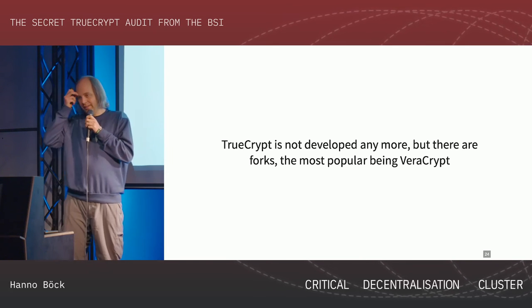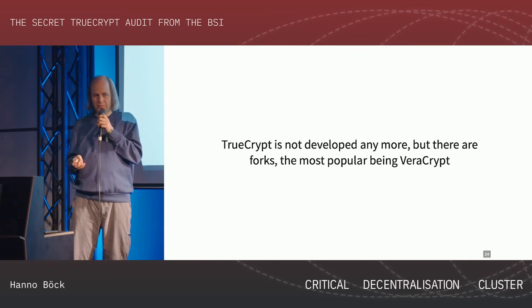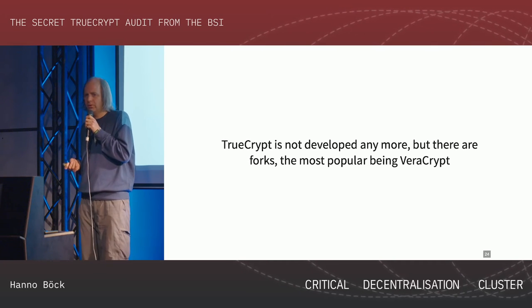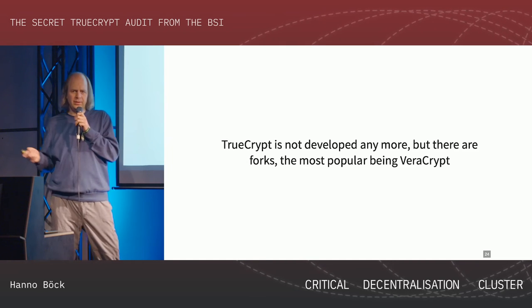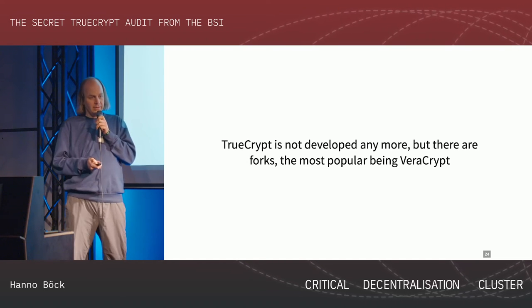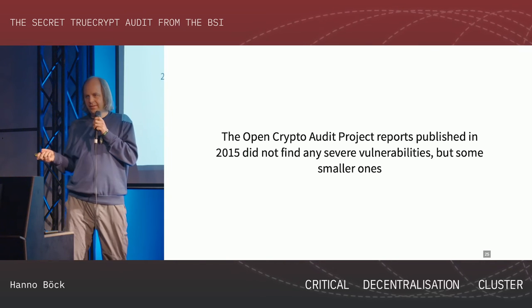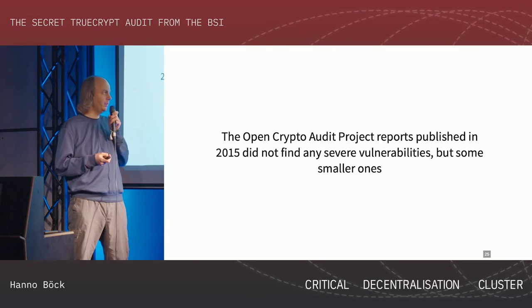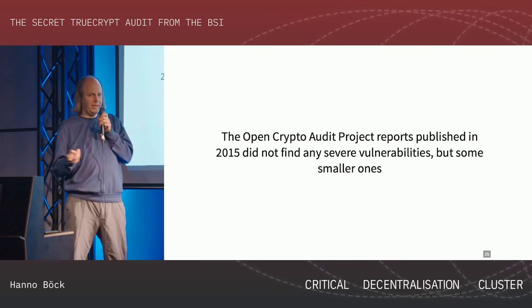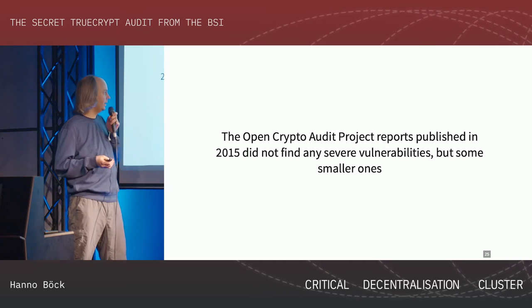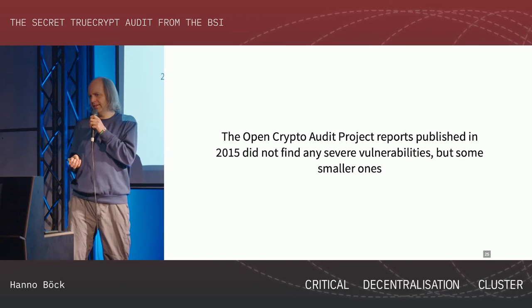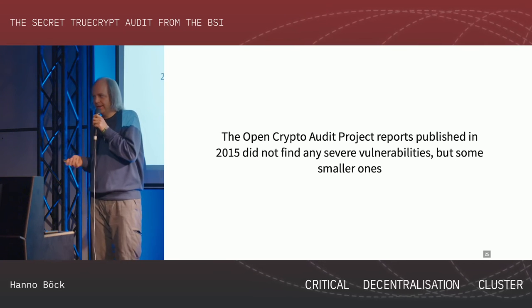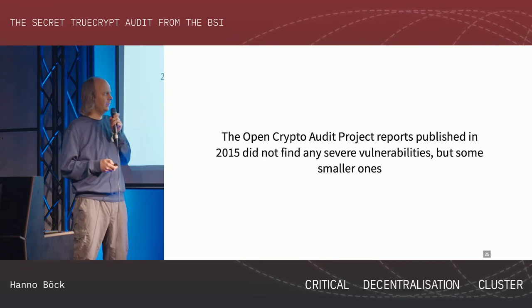Since then there have been no new versions of TrueCrypt; it's not developed anymore. But there are some forks - people took the source code and developed it on their own, and the most well-known is VeraCrypt. The security audit started by Matthew Green - the Open Crypto Audit Project - still finished. They published two reports, the second one in 2015, and they did not find any severe security problems, though there were a few unusual situations that could cause a security problem.